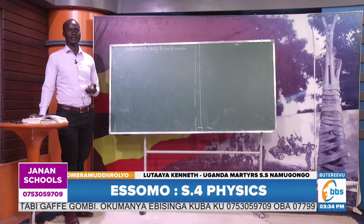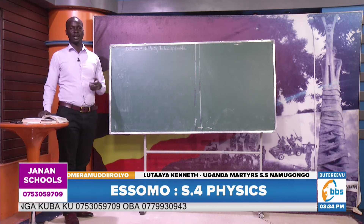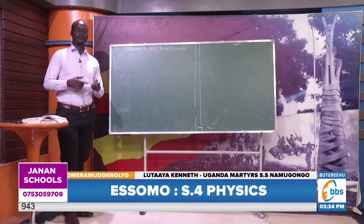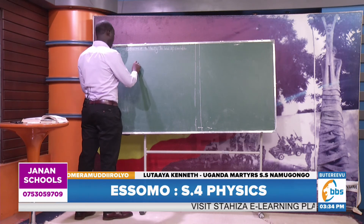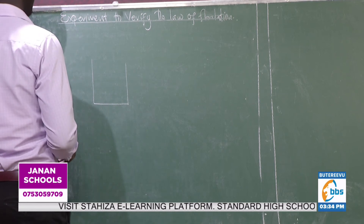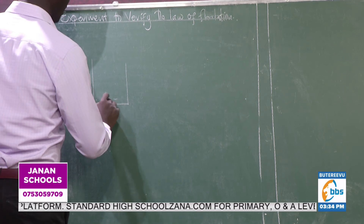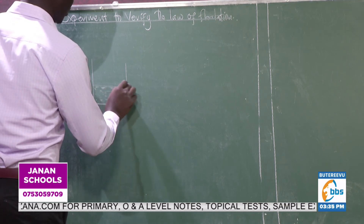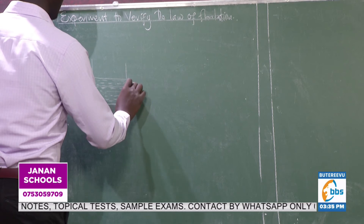The observation we shall make in the lab is that the weight of the test tube plus the lead shots will be equal to the calculated weight of the volume displaced. The weight of the water displaced is calculated using the known volume and the standard density of water — either 1,000 kg/m³ or 1 g/cm³, depending on units. The observation will be that the two weights are equal.